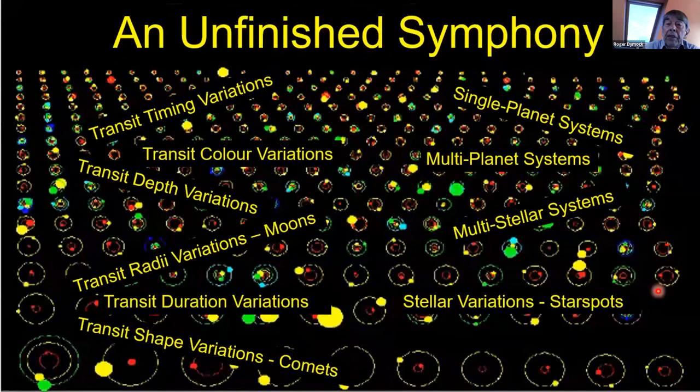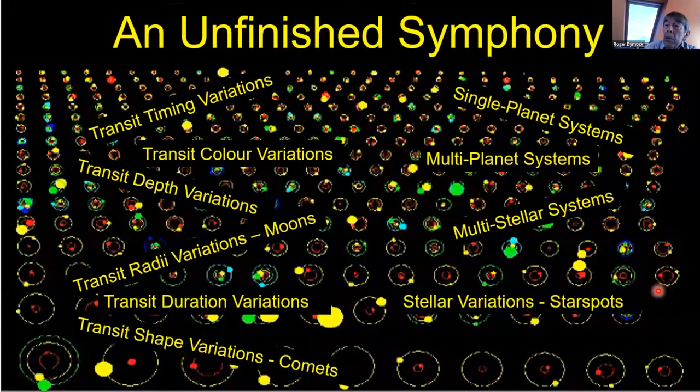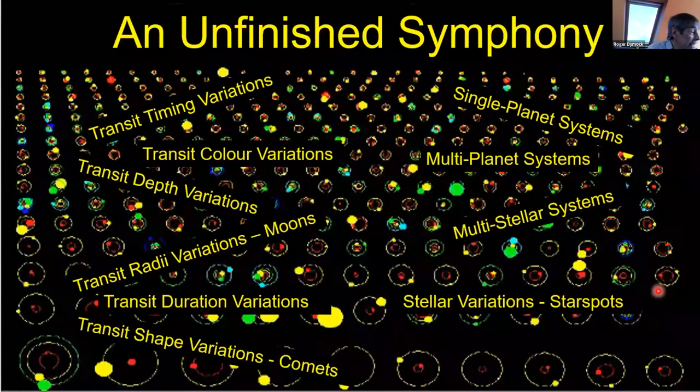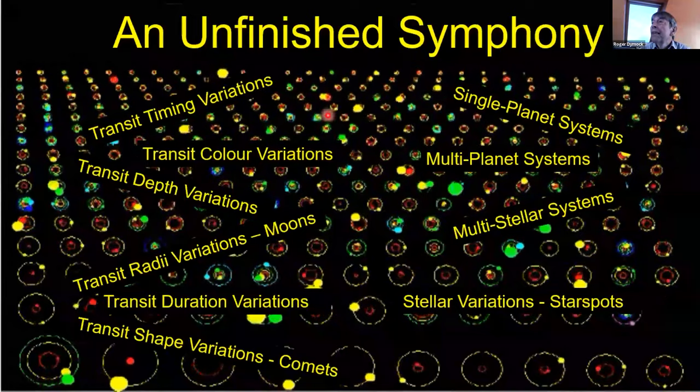So, finally, an unfinished symphony of variations and systems. I've given you a glimpse of the multitude of variations, but I will leave it to the far more clever people following to explain the various mechanisms and how they can be detected and analyzed. So, you'll be glad to know that's my presentation finished. Thank you, Roger. Do we have any questions or is anybody still there? Comment from Siegfried. He says ExoMoon effects can be modeled by the Python package Pandora by Michael Hippke. Right. Thank you, Stephen for that.